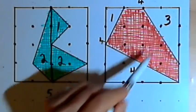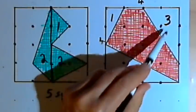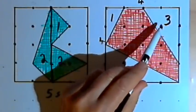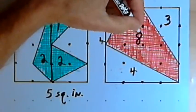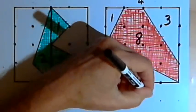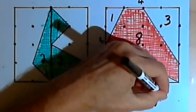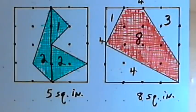That will tell me how much this red polygon is. So 16, the area of the entire box, minus 8, the area of these 3 white areas, is 8. That means this red polygon has an area of 8 square inches.